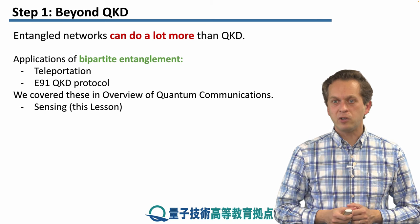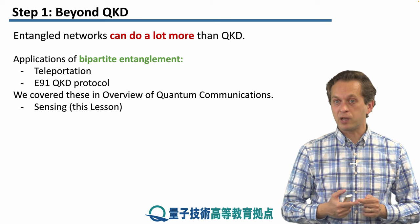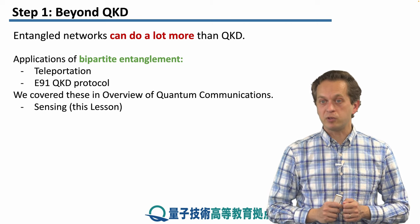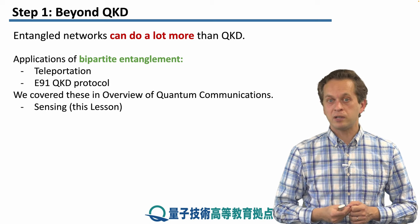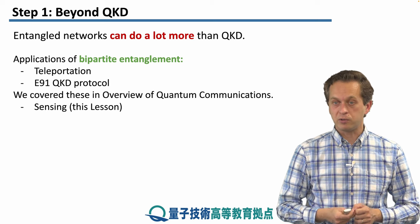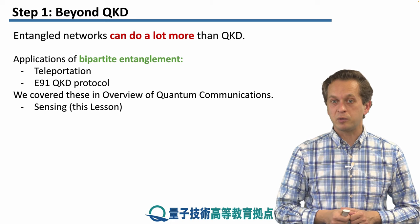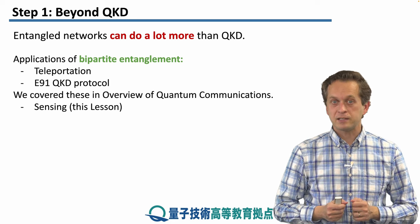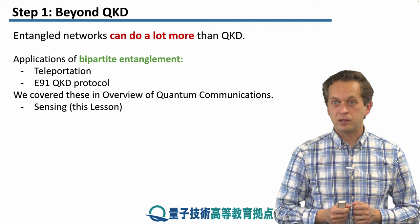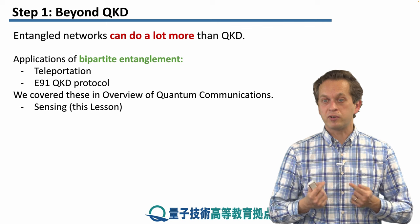We already know a few applications of bipartite entanglement. We learned about teleportation — how we can send unknown quantum states between distant nodes of the network — and we learned about the E91 QKD protocol that uses distributed entanglement in order to create unbreakable encryption. In this lesson we're also going to talk about a different application of bipartite entanglement in the form of sensing.